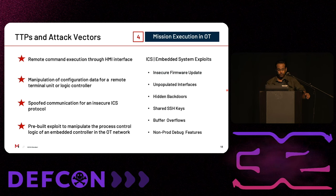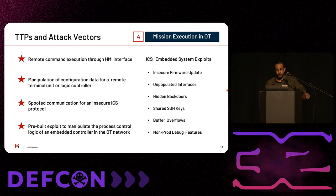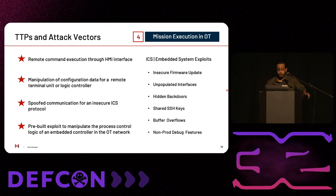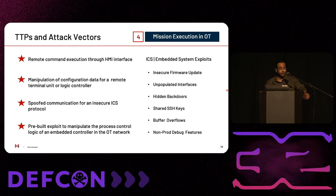As a general rule of thumb, it is relatively easier to cause process disruption compared to process manipulation. ICS systems are built with redundancy, safety, risks, and hazards in mind, and thus high-consequence manipulation often requires prior reverse engineering and exploit development. Common security issues we find while assessing and building exploits for embedded ICS systems include insecure firmware updates, unpopulated interfaces, hidden backdoors, shared SSH keys between different customers, buffer overflows, and leftover debug functions from development and testing that have carried over to production systems.